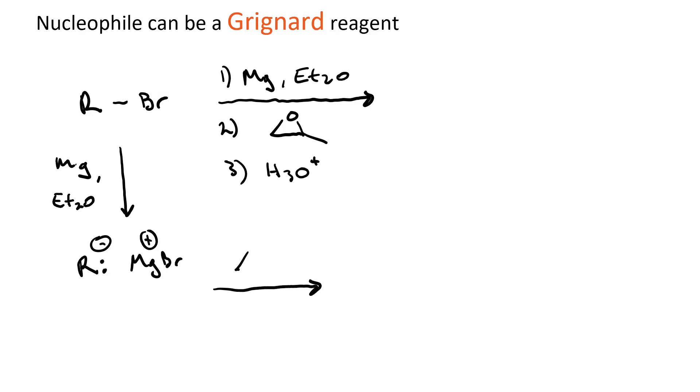In the second step, our Grignard reagent performs nucleophilic attack on the less substituted carbon of our epoxide, opening the ring. So we now have an alkoxide.